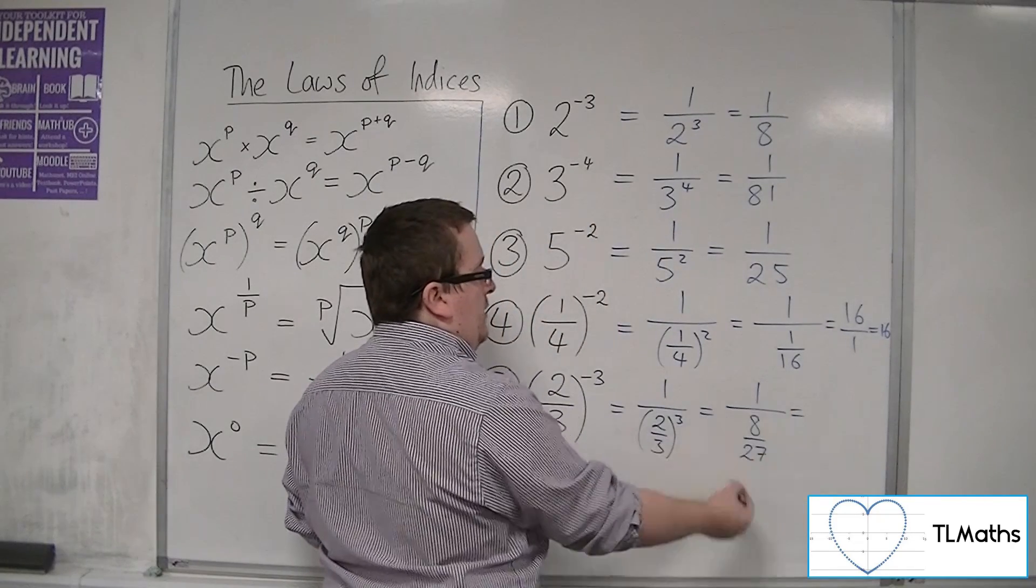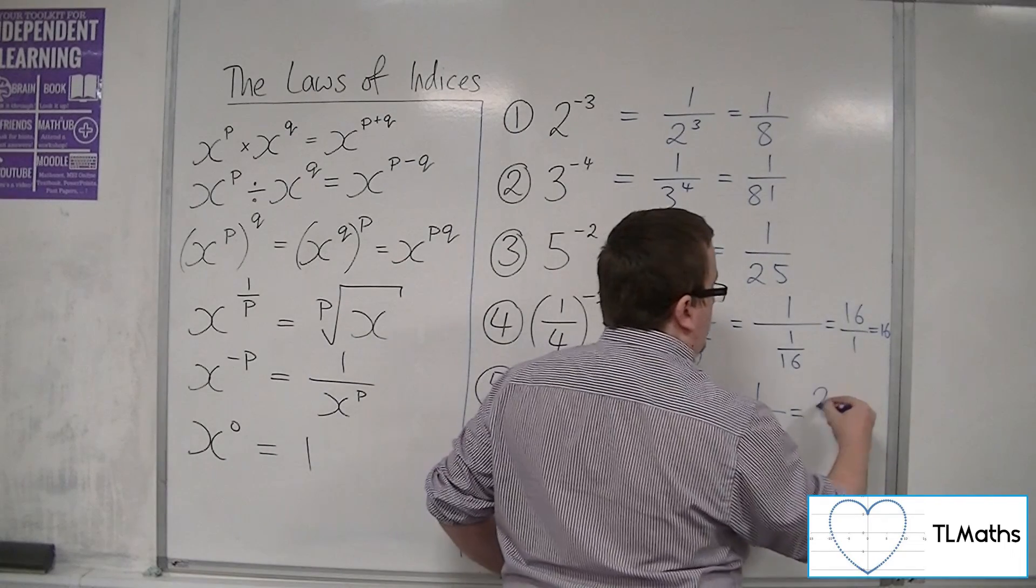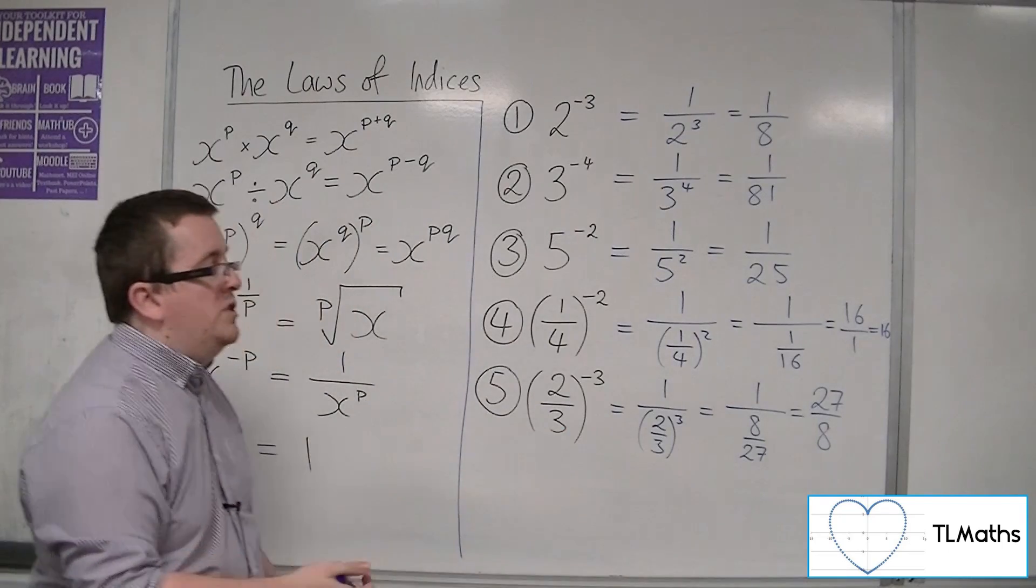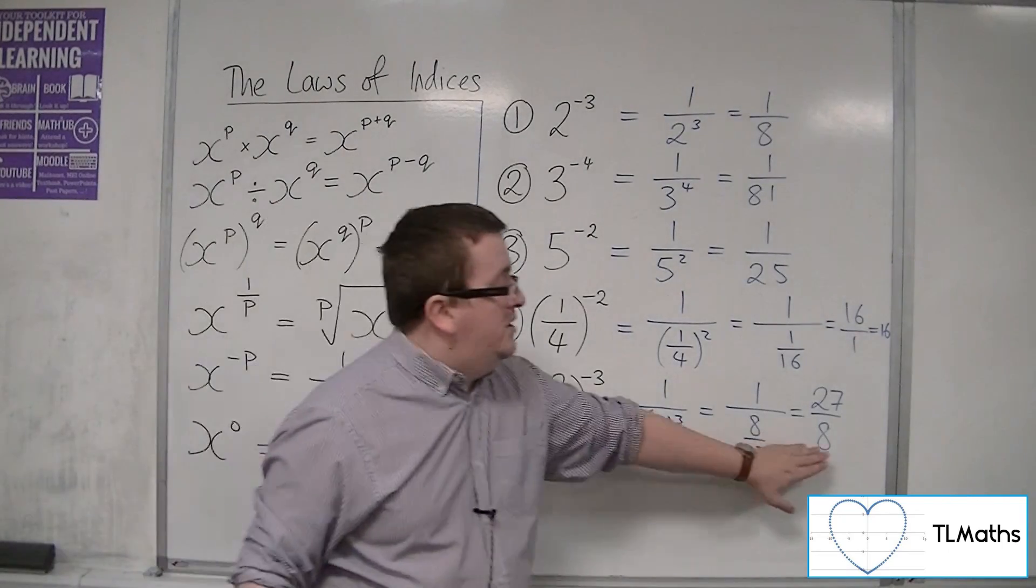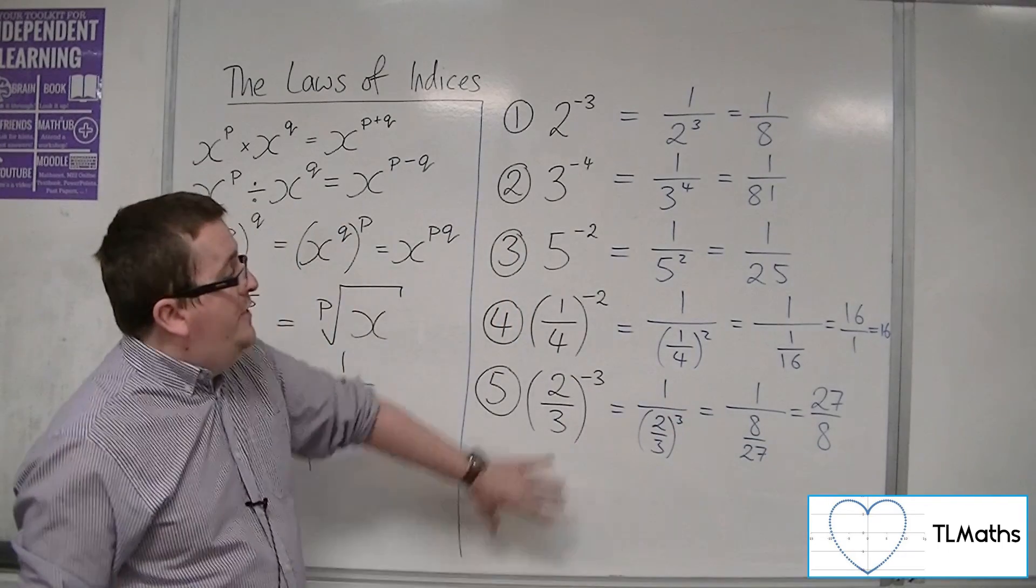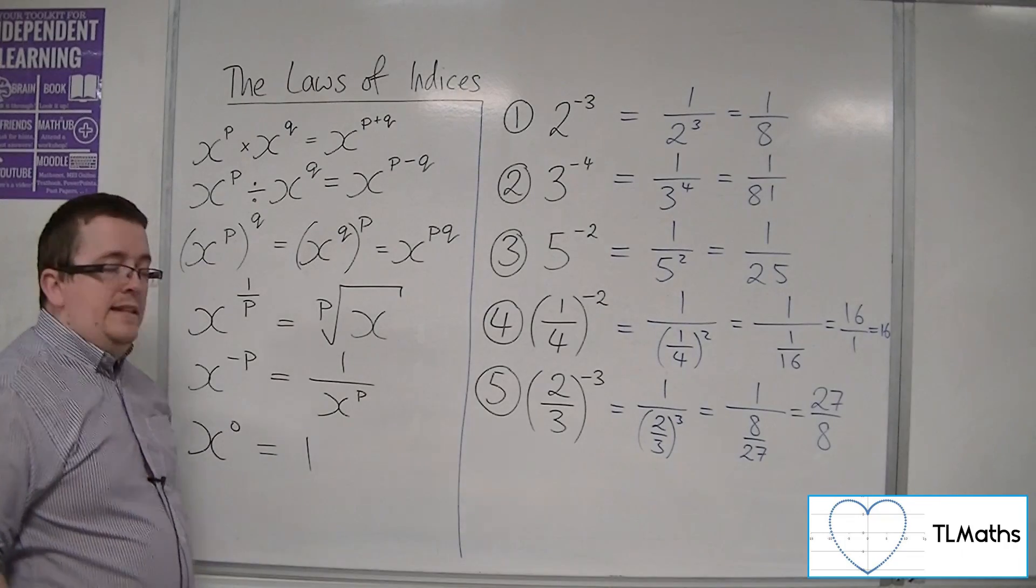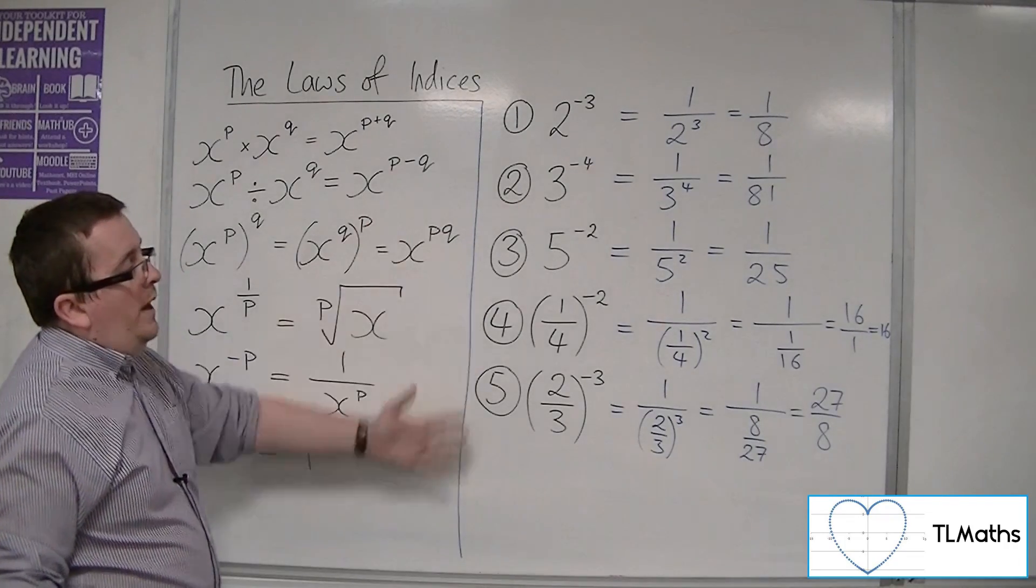1 divided by 8 over 27 is 1 times 27 over 8. It flips the fraction upside down, gives you the reciprocal. So 2 thirds to the minus 3 is actually 27 over 8. This is how we can use this rule of the negative index to evaluate these.